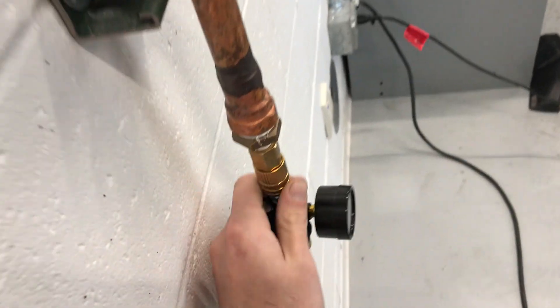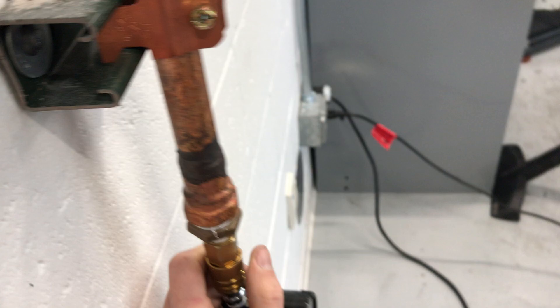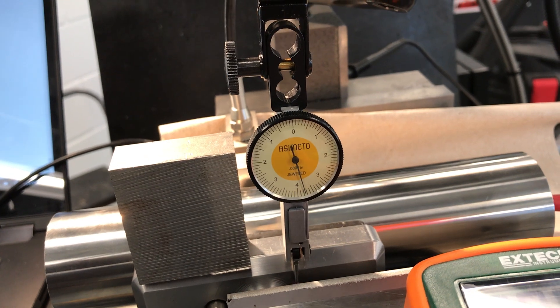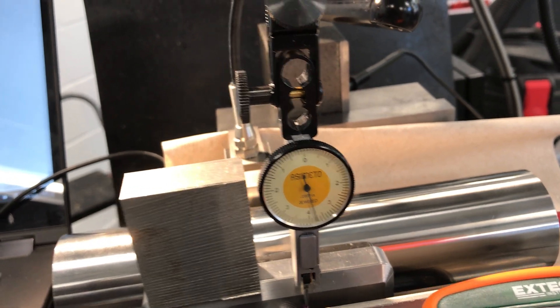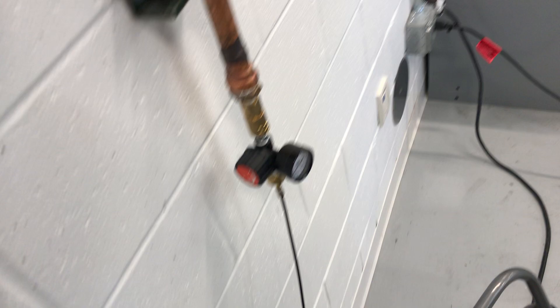I'm going to turn off the air. 3.8 thou. So at 109 pounds of preload, we have a 1 tenth air gap.